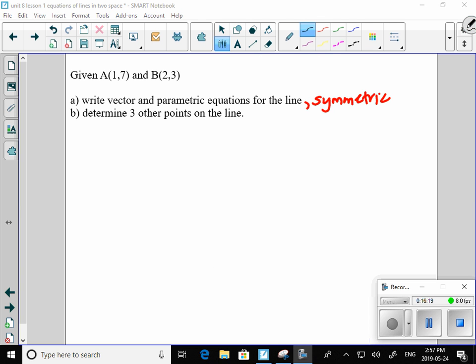Given A is 1, 7 and B is 2, 3. We're going to write vector and parametric and symmetric. I changed my mind. Equations for this line. So, the first thing that I need to know is what is my direction vector. I'm going to make my direction vector AB. You could do BA. It's all good. So, the vector AB would be b component subtract a component. So, it would be 1, negative 4.